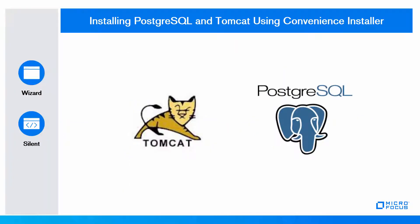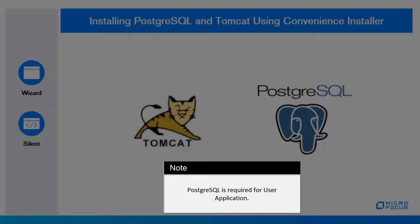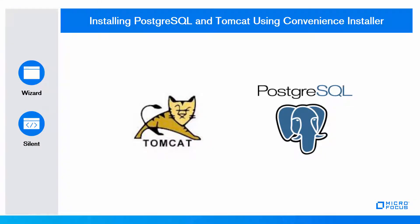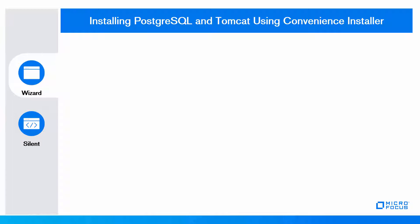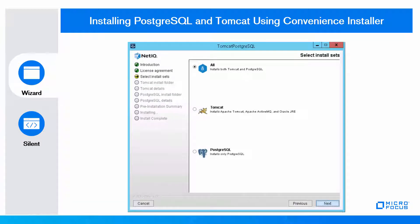To install PostgreSQL and Tomcat using the convenience installer that NetIQ ships with the 4.5 installation package: PostgreSQL is required for the user application. In this example, we are selecting to install both applications. You can install them using the wizard or perform a silent installation. In a wizard installation, select the 'All' option in the Select Install Sets page.